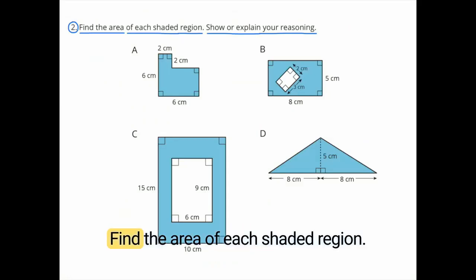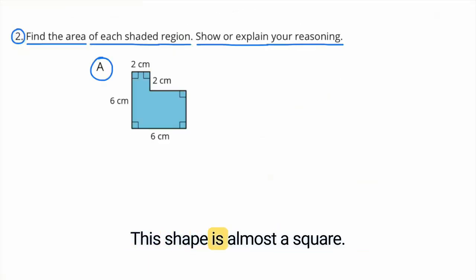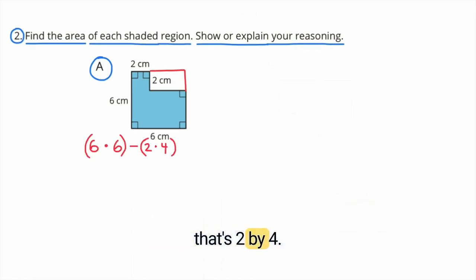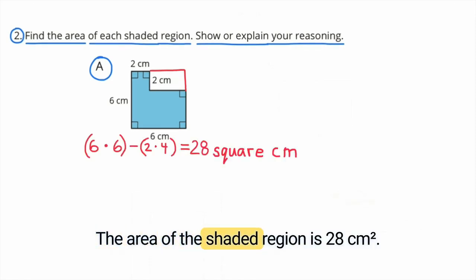Number 2. Find the area of each shaded region. Show or explain your reasoning. A. This shape is almost a square. Imagine it is a square that's 6 by 6 and it's missing a section that's 2 by 4. The area of the shaded region is 28 square centimeters.